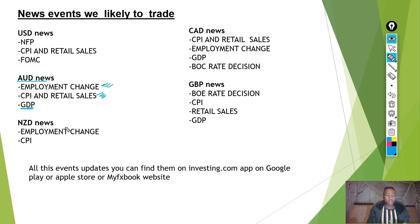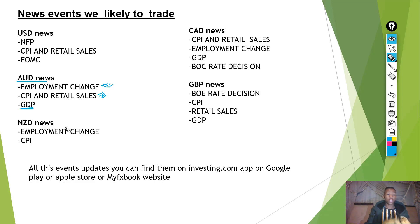If the GDP is better than last year, that means the economy is doing well and produced more goods. If the GDP is lesser, that means the economy is doing badly — less competitive compared to itself or other countries. For AUD news pairs: when AUD is the base currency, I focus on AUD/JPY and AUD/USD; when AUD is the quote currency, I focus on EUR/AUD only.